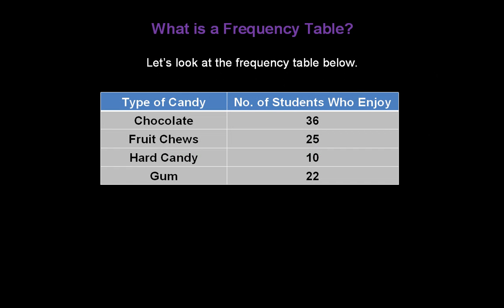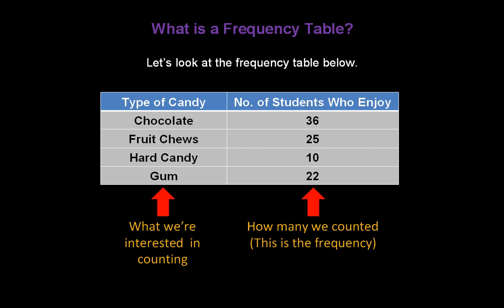Let's take a look at a simple frequency table. The very first column is what we're interested in counting — in this case, types of candy. The second column tells us how many we counted in each category. That's the frequency — how often something happened. For example, 36 students told us they like chocolate candy, 25 students told us they like fruit chews, and so forth.